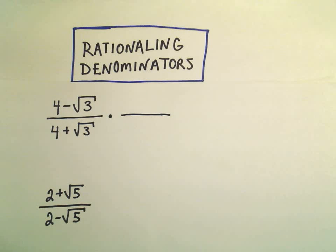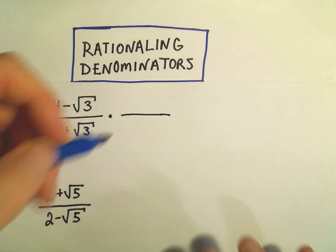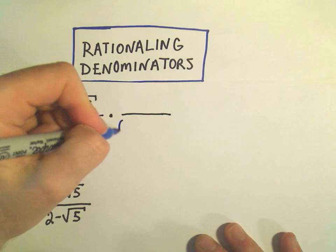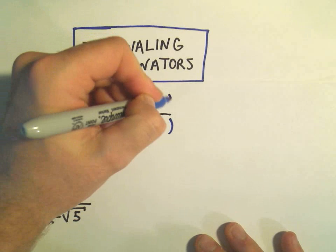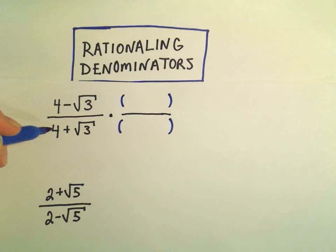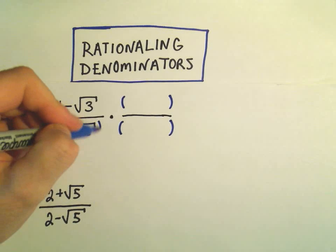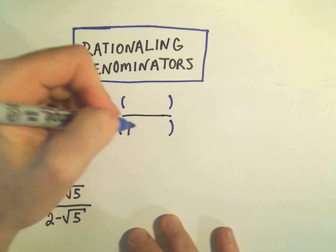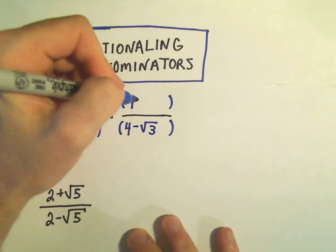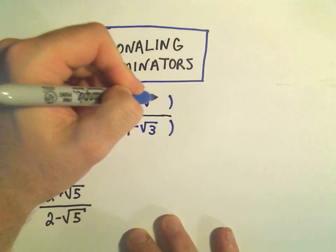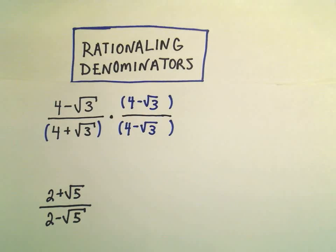In my first example, since I'm rationalizing the denominator, I multiply both the top and the bottom by the conjugate of the denominator. So the conjugate of 4 plus square root of 3 will be 4 minus square root of 3, so I'm going to multiply the top and the bottom by 4 minus root 3.